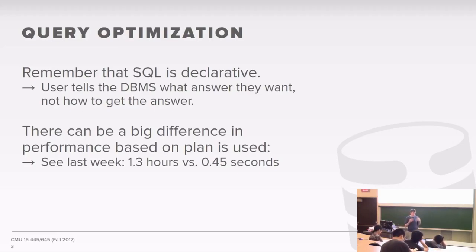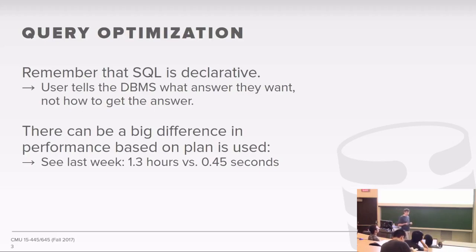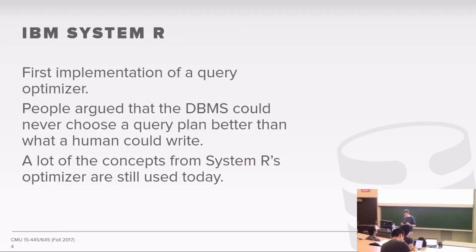This is one of the big differences explaining why the commercial systems — Oracle, SQL Server, DB2 — generally have much better performance than the open source systems.